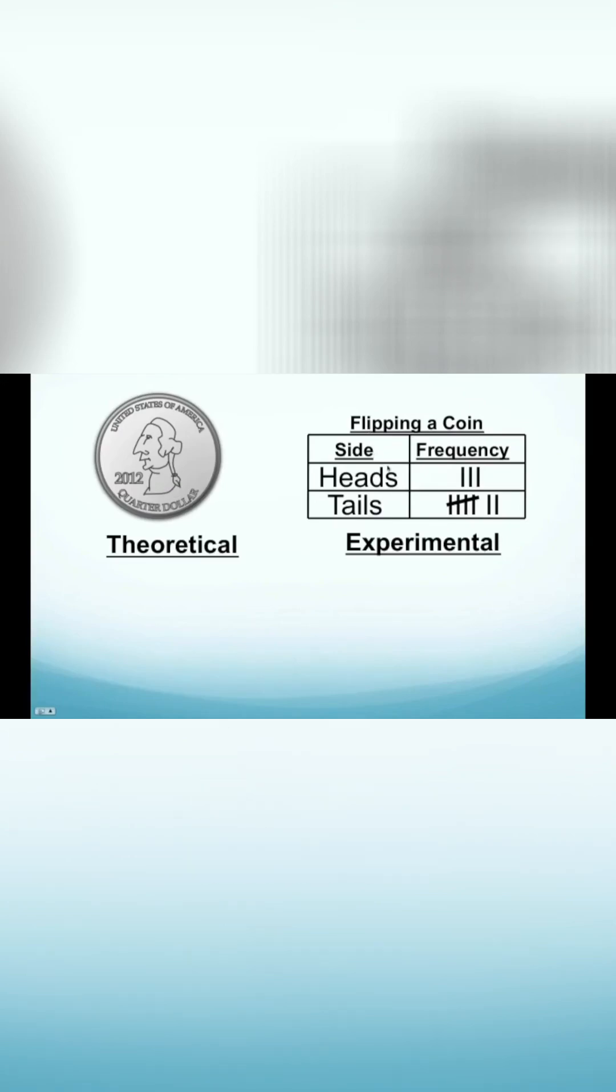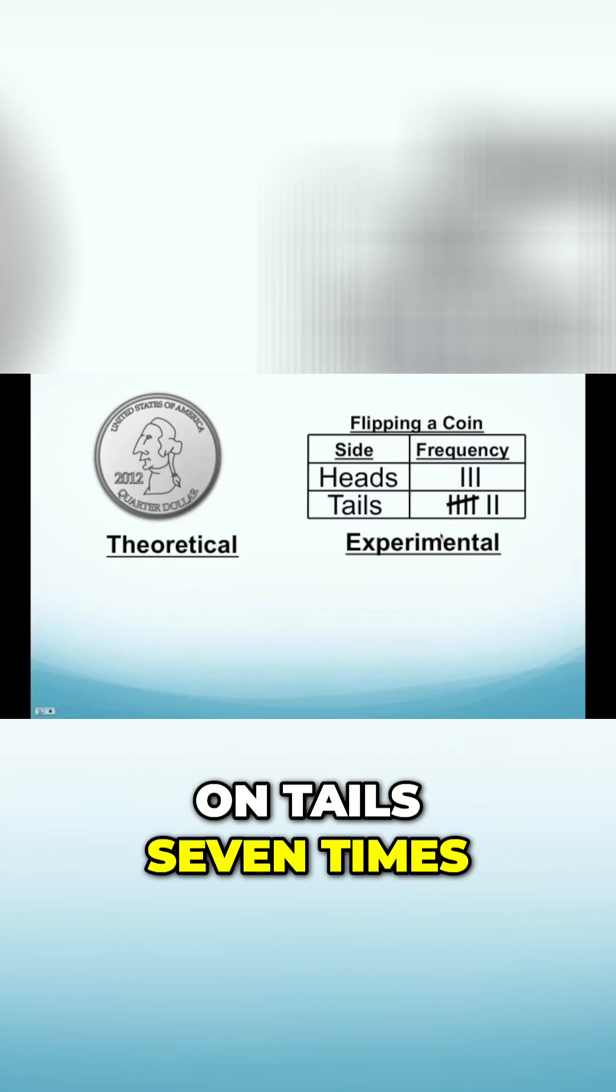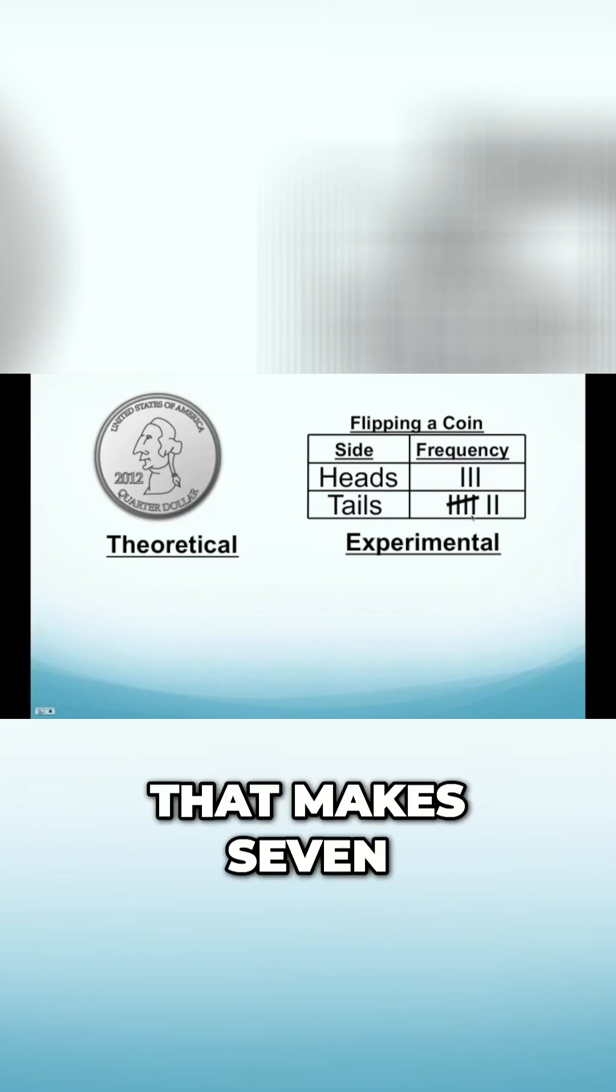We flip a coin a certain number of times, and we land on heads three times, and we land on tails seven times. Because we have five here and two here together, that makes seven.